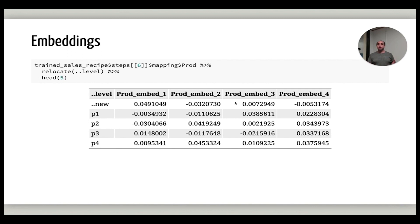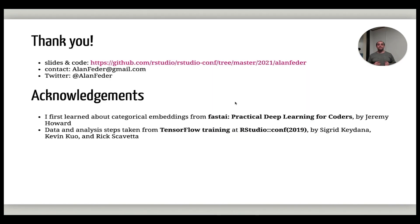Maybe you could use cosine similarity to figure out which products are most similar to each other. There's obviously a ton more that I could talk about with categorical embeddings — it's a topic that I find really exciting. I hope you learn and discover more about categorical embeddings as you use them within your modeling. Thank you very much for coming and good luck.